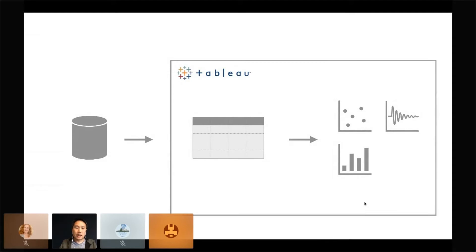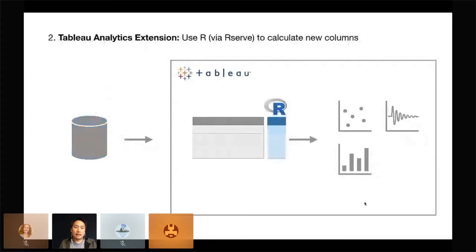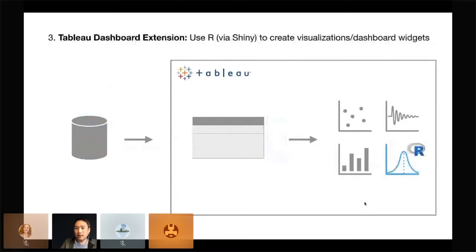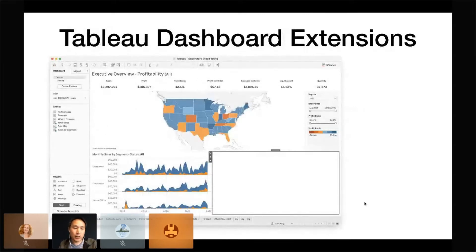To give a visual of what those three options look like: on the left there's a database that could be a CSV or Excel file getting loaded into Tableau, which has its own internal data model, which you use to create visualizations. The first option is using R upstream to populate the database or create CSVs. The second option — the Tableau analytics extension — uses R to do a dplyr mutate-type operation, adding a new column of calculated data to existing tables. The third, which we're going to talk about today, is using R to create new visualizations and widgets. The first option works great — a lot of people do it. The second I would avoid. The third is what we're focusing on now.